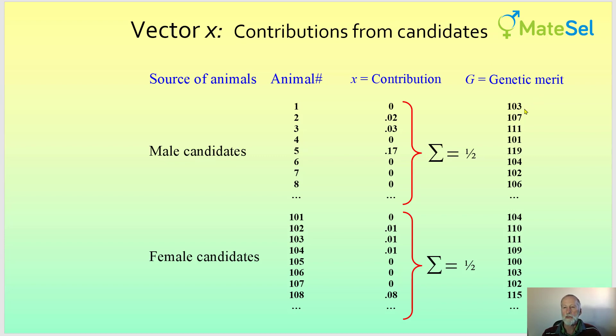And the rightmost column here, G, is a prediction of the genetic merit calculated outside MateSel for each candidate. It's an index value typically across traits.